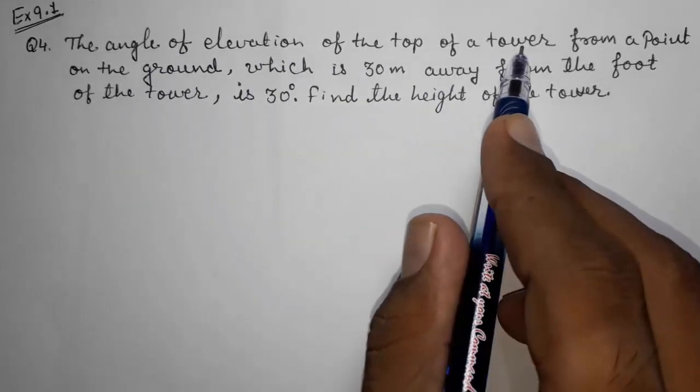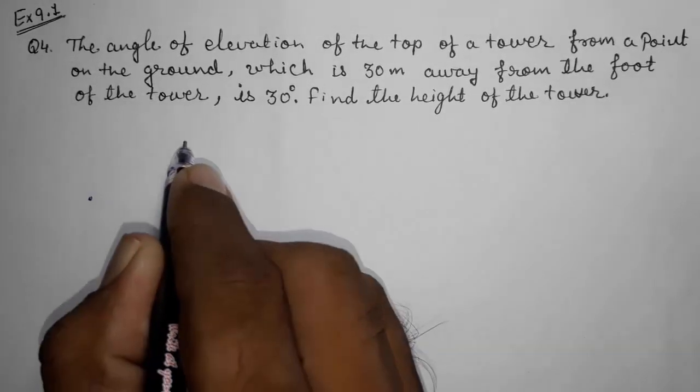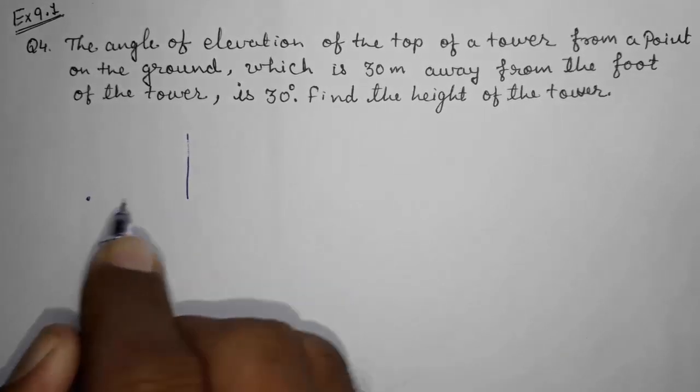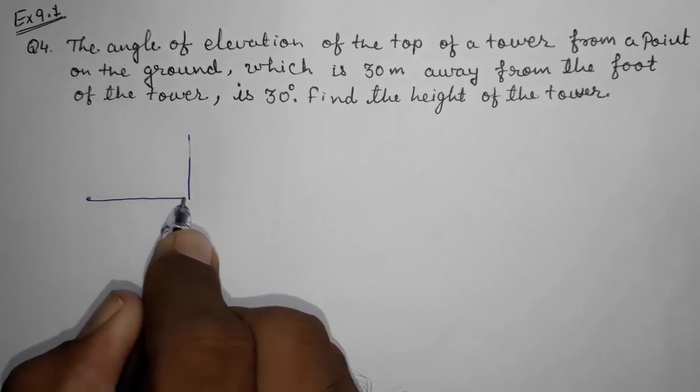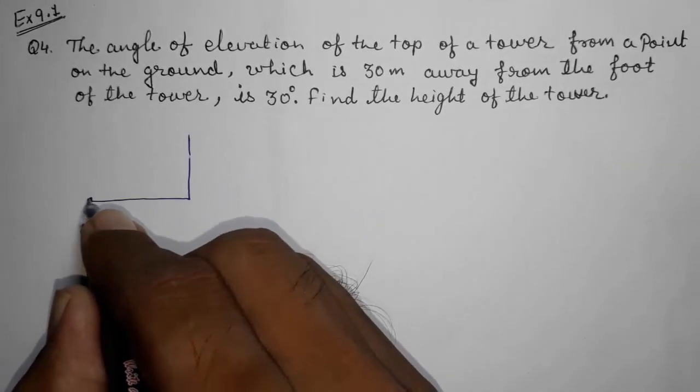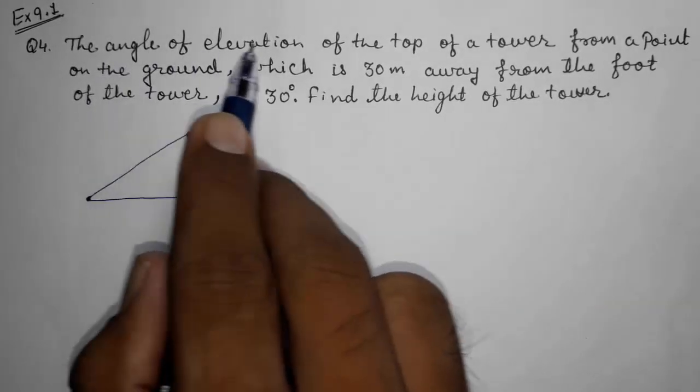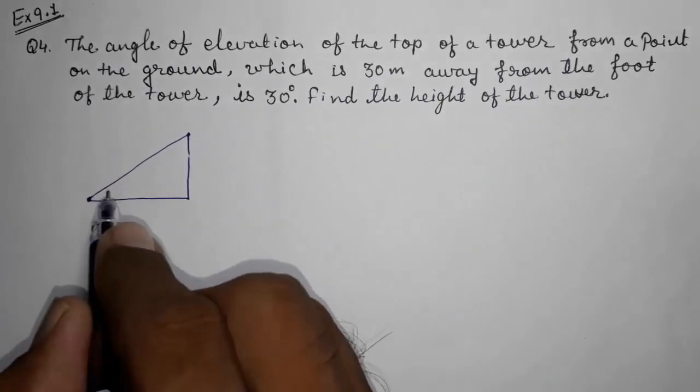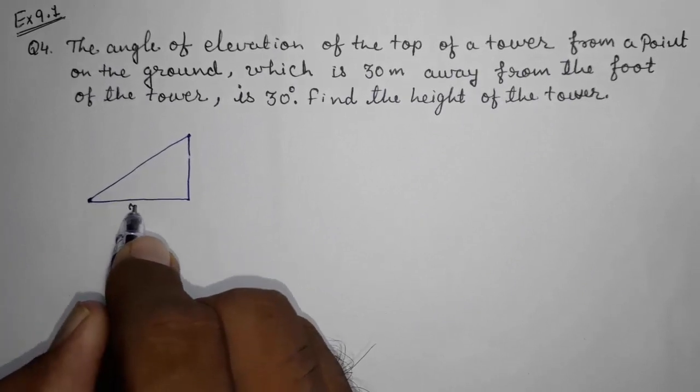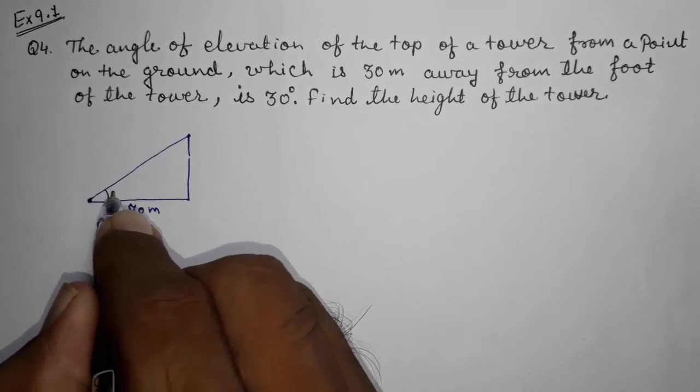So they said the angle of elevation of the top of the tower from a point on the ground. Suppose this is the point and this is the tower. This is the distance between the point and the tower, and this is where they are looking at the angle of elevation of the top of the tower from the point on the ground which is 30 meters away and is 30 degrees, making an angle of 30 degrees.